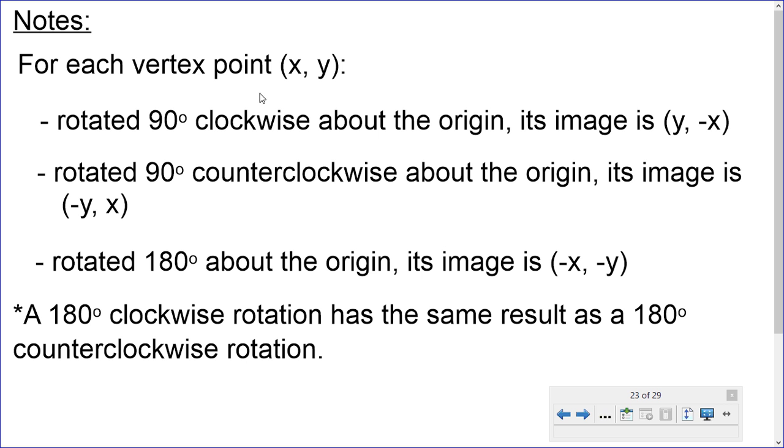For each vertex point (x, y), when you rotate 90 degrees clockwise about the origin, its image is (y, -x). If you rotate it 180 degrees about the origin, its image is (-x, -y). Note, a 180 degrees clockwise rotation has the same result as 180 degrees counterclockwise rotation. Let's see some examples.